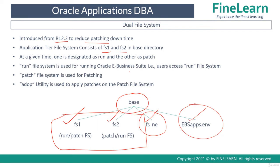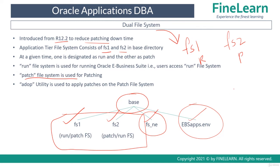The run file system is used for running Oracle E-Business Suite — end users always access the run file system when services are started. For example, if FS1 is the run file system and FS2 is the patch file system, all users connect to FS1. The patch file system is used only for patching, and the ADOP utility is used to apply patches on the patch file system.